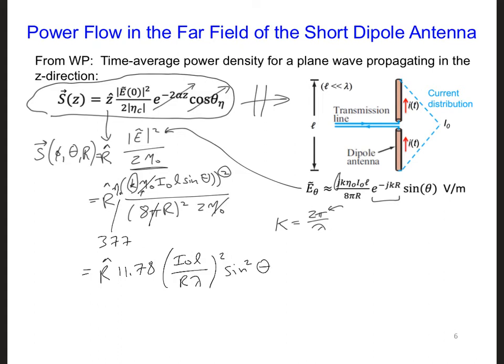So now we have an expression for the time average power density flowing away from the short dipole antenna. And this works in any direction from the antenna. We can see that the direction of power flow is in the r hat direction. And the power density is a function of r as it spreads out over a bigger and bigger sphere with distance from the antenna.